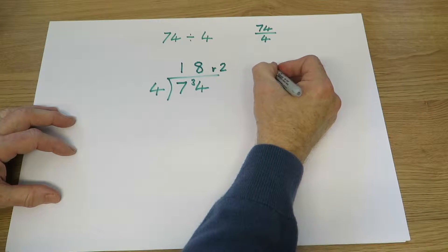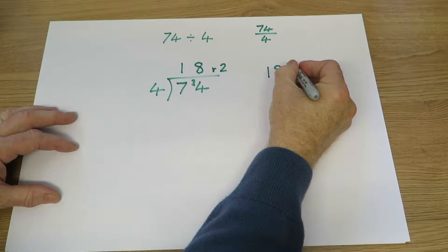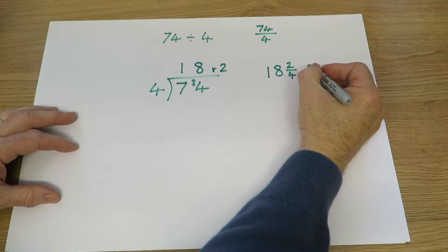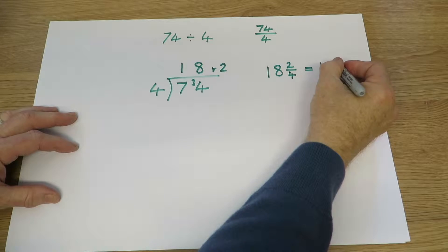Or we can say, well, there's 18 and 2 quarters left, which will simplify to 18 and a half.